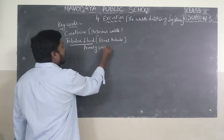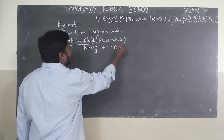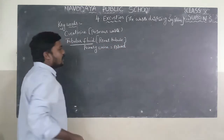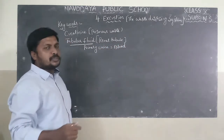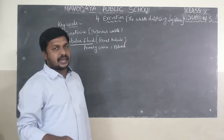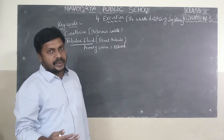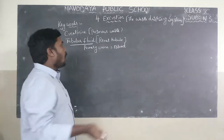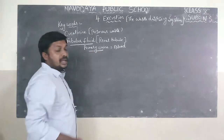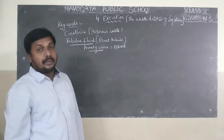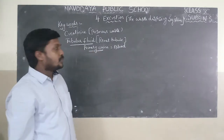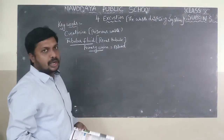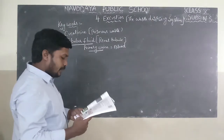Primary urine is equal to blood. Why? Because the components present in the blood — all useful materials and harmful materials — are all present in primary urine, except blood cells. So primary urine is essentially equal to blood.